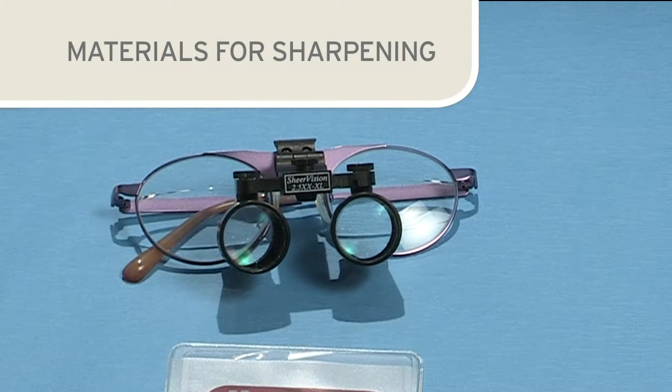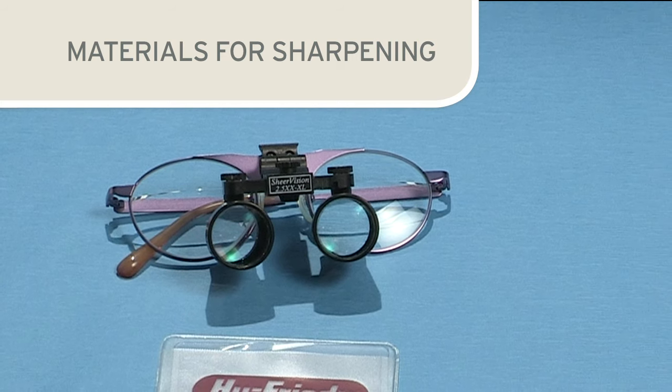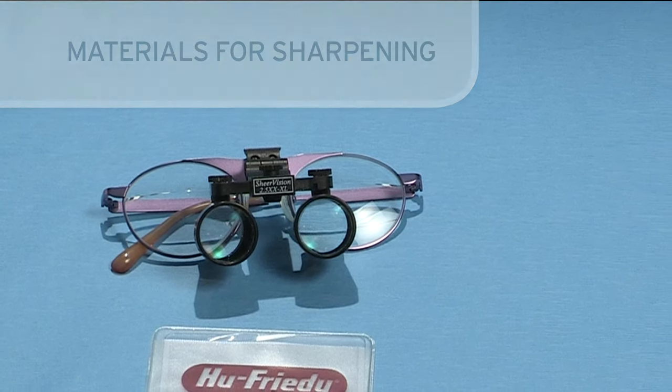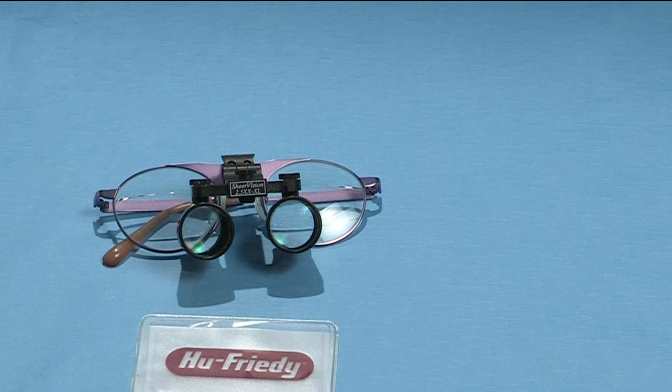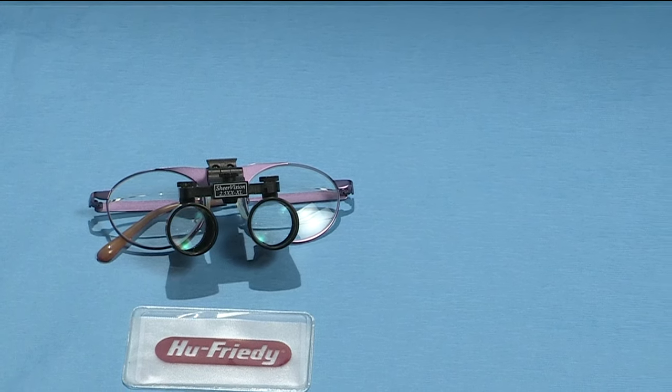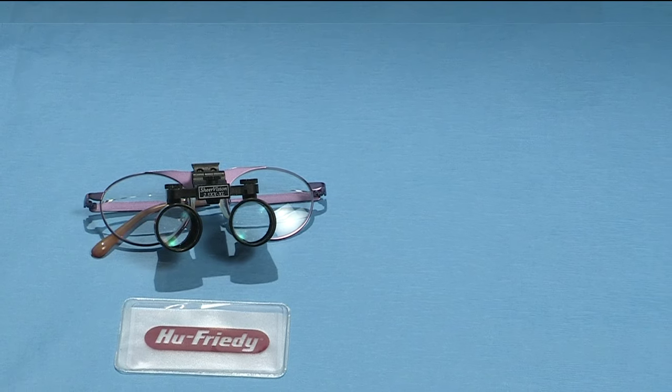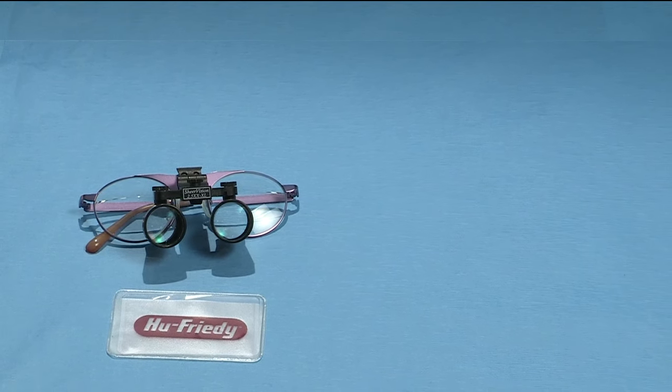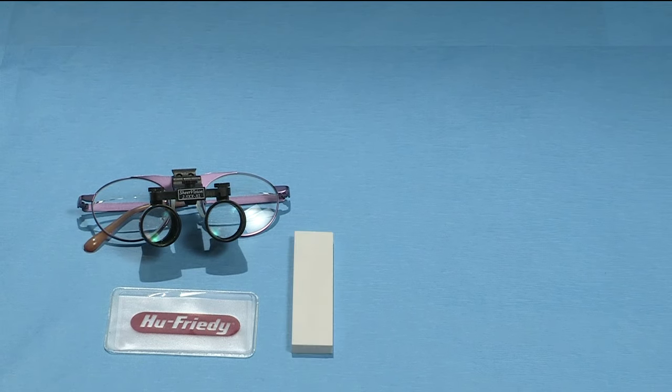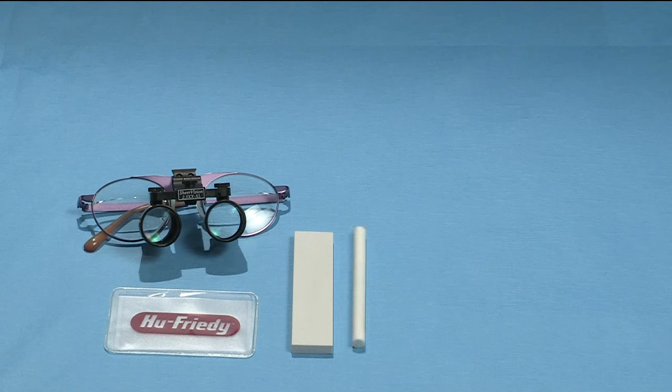Before beginning the sharpening process assemble the required materials. A sturdy flat work surface with proper lighting is essential. The use of loops or magnifying lens is essential to clearly see the edges of the instrument blade. Also needed will be a flat sharpening stone and a cylindrical stone.